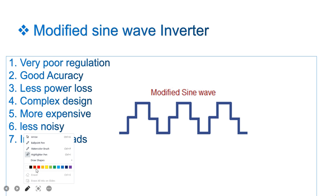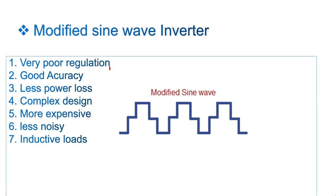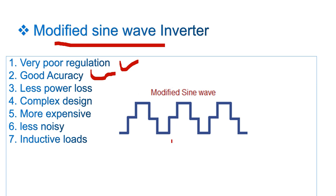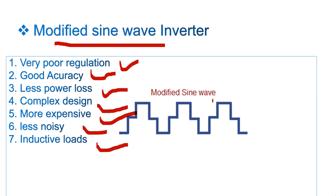The third type is the modified sine wave inverter. It has very poor regulation because it is still a square-step approximation of a sine wave. It does have good accuracy in some respects, less power loss compared to a square wave, a more complex design, and is more expensive. It is less noisy and inductive load operation is okay. However, the best choice when going to the market is still the pure sine wave inverter.